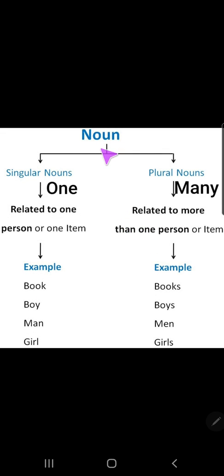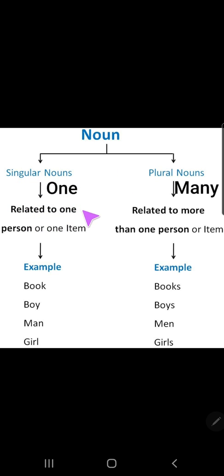Students, as you all know, in the previous video I explained about noun — noun is the name of a person, place, animal or thing. So students, singular noun and plural noun — we can divide nouns into two parts: singular nouns and plural nouns. Singular is related to one person, one item, or one thing.